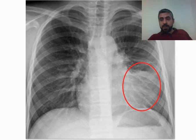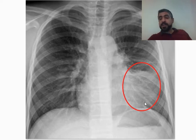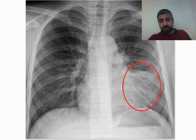What's going on here? Everything looks quite good except some increased opacity in the left lower zone, associated with loss of sharpness of the left cardiac border. This indicates lingular pneumonia, as we said previously.